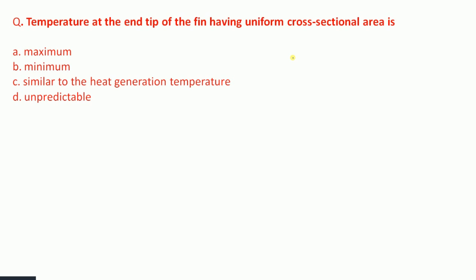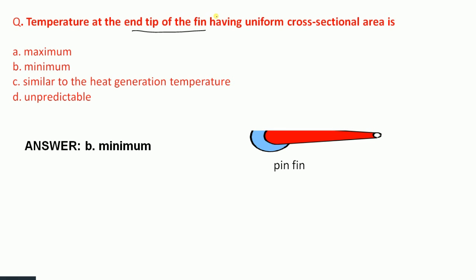The next question: what is the temperature at the end tip of a pin having uniform cross-sectional area — maximum, minimum, similar to that of heat generation temperature, or unpredictable? The temperature at the end tip of the pin is minimum. Therefore, option B is the correct answer.